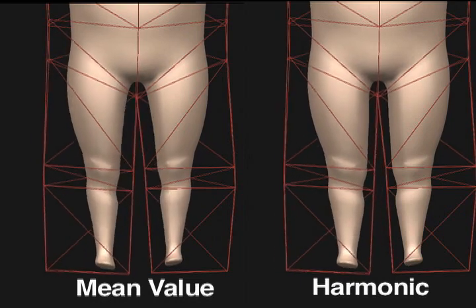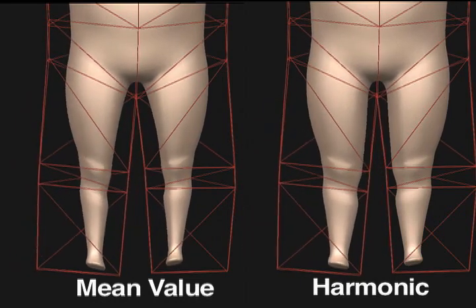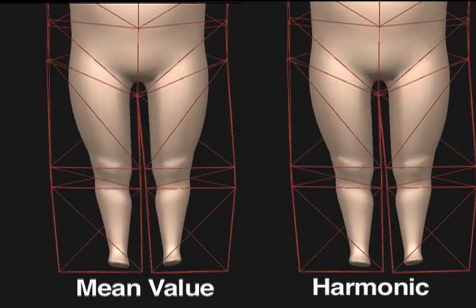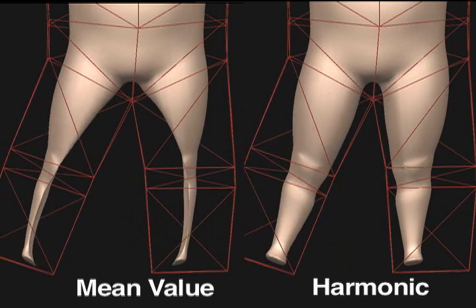Here's a side-by-side comparison of the two methods. Another advantage of harmonic coordinates over mean value coordinates is that the behavior of the deformation in the interior of the cage can be more precisely controlled.